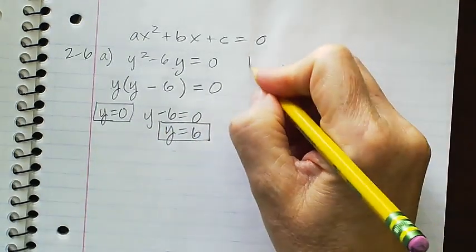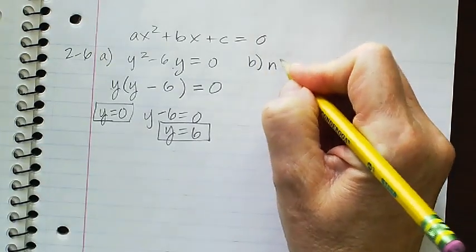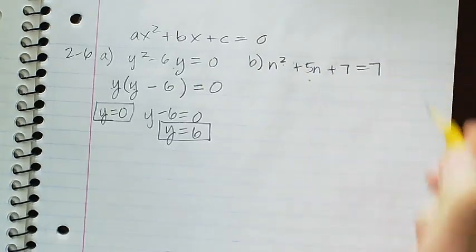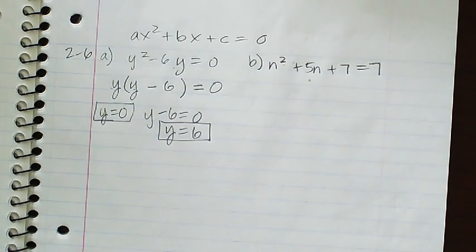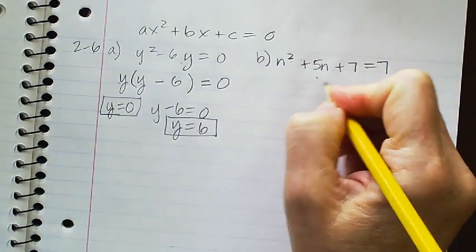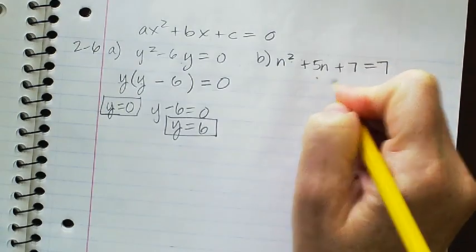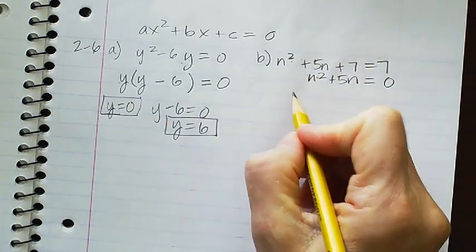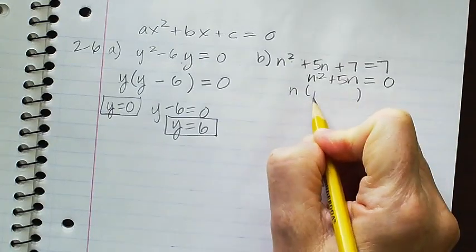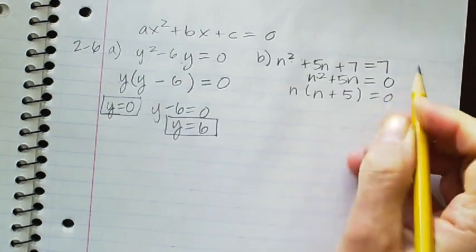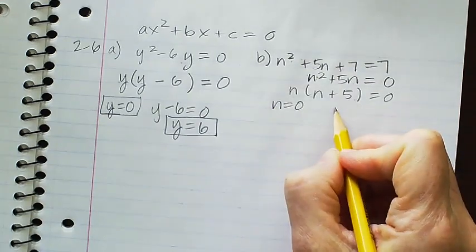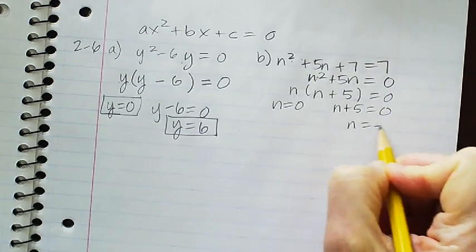Those are your x-intercepts. For the next one, equals 7 — if I subtract 7 from both sides, I get n squared plus 5n equals 0. Then we can do the same thing: factor out the common factor of n. n times n is n squared, n times 5 is 5n. So my two x-intercepts would be 0 and negative 5.